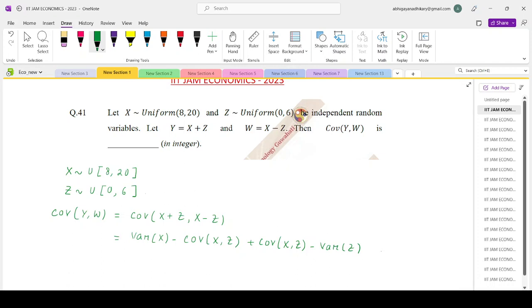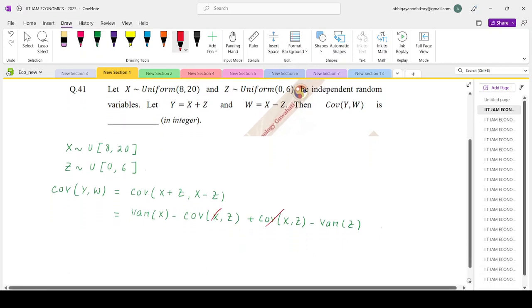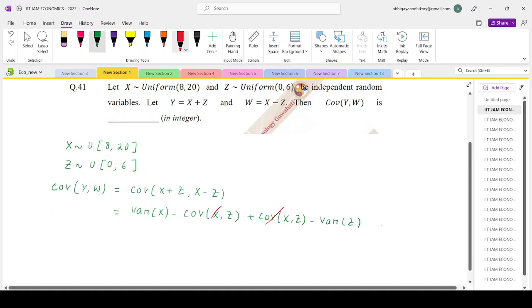Given they are independent, these covariance terms are zero or they are cancelling out. So this is basically giving you an answer of variance of X minus variance of Z.